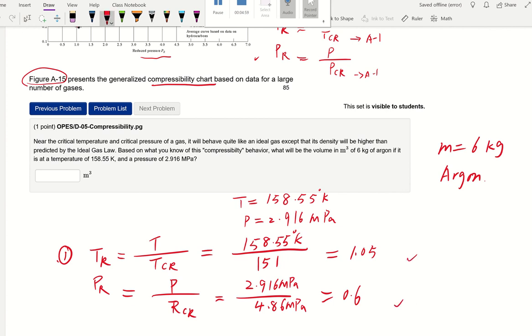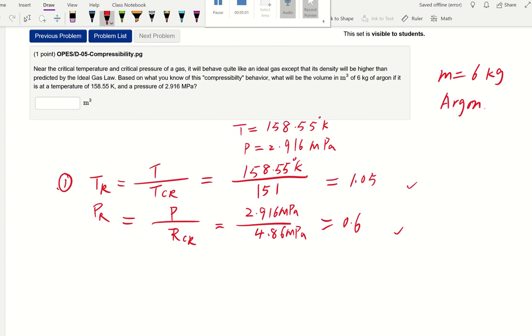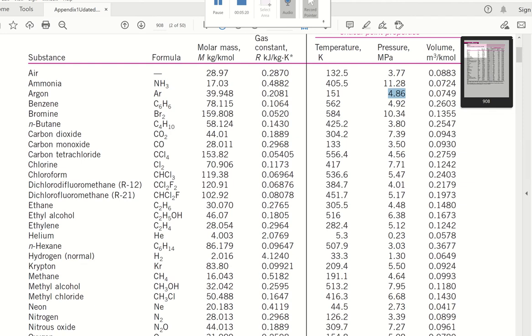Now we're going to go ahead and look at the chart, compressibility chart. That's from table A-15 and 1.05 for TR. And PR is 0.6. So let's go ahead to table A-15.